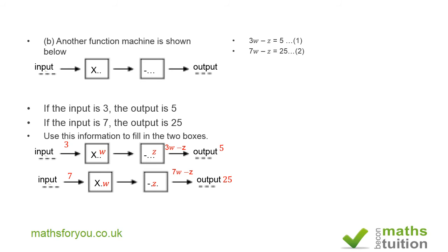Now I can do this in a few ways. What I want to do here is minus z is equal to 5 minus 3w for equation 1. Mind you that minus z equals all of 5 minus 3w, and not minus into 5 minus 3w. If we then substitute this into equation 2, we end up with 7w plus 5 minus 3w is equal to 25. If we subtract 5 from both sides, we end up with 4w is equal to 20.